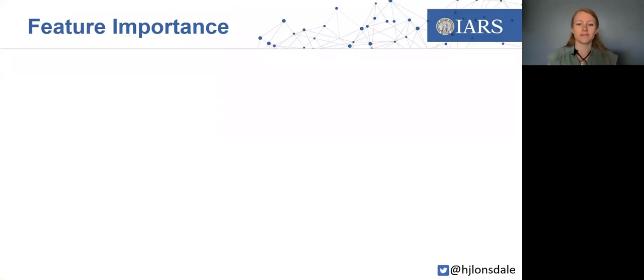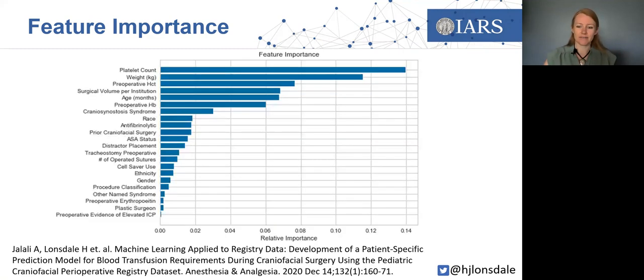One easy way to start to understand the model's workings is feature importance or feature ranking. We can interrogate some types of models to ask which features were most important or carried the most weight in producing the prediction. Here is the feature ranking for a model to predict the transfusion requirements in pediatric craniofacial surgery. We might not be surprised that the most important features included the platelet count, the preoperative hemoglobin, and the hematocrit. And that feels reassuring that the model's on the right track.